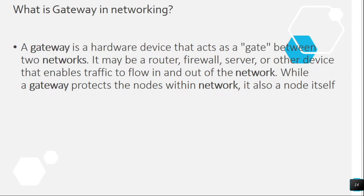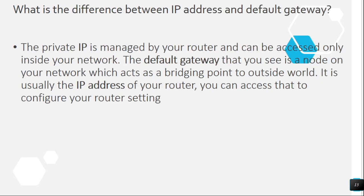Question 13: What is a gateway in networking? A gateway is a hardware device that acts as a gate between two networks. It may be a router, firewall, server, or other device that enables traffic to flow in and out of the network. While a gateway protects the nodes within a network, it is also a node itself.